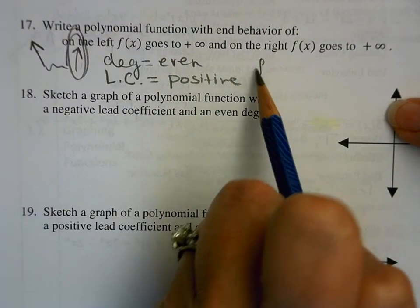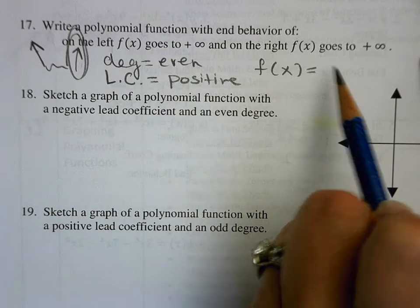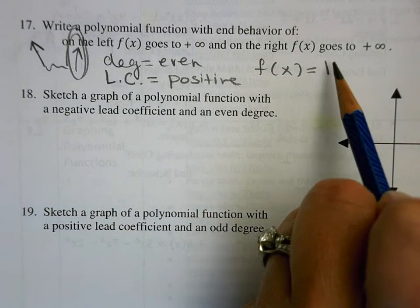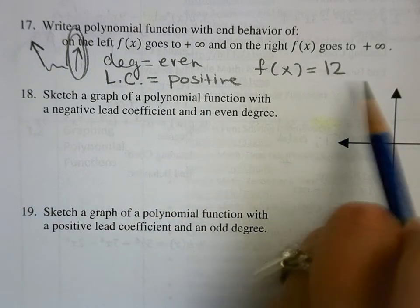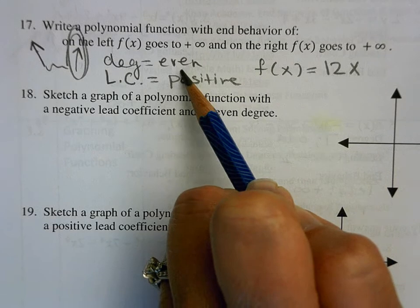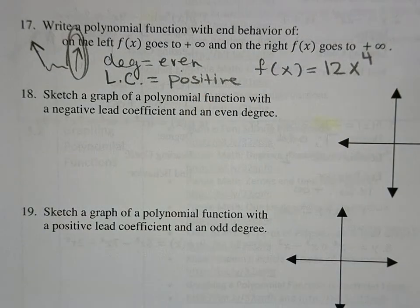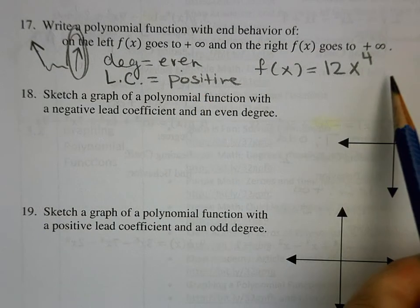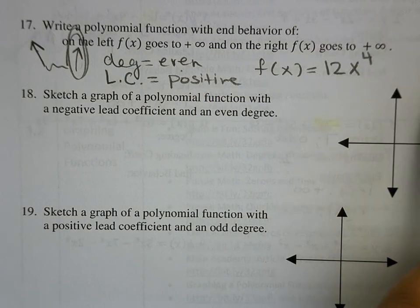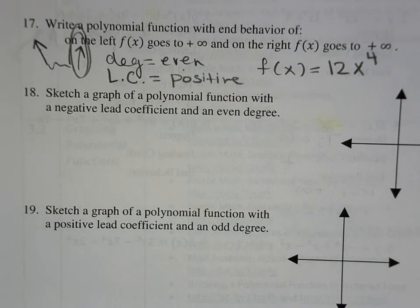I just create any equation as long as my front number is positive. I'm going to say 12 — you can pick any number — and then x to an even degree. How about 12x to the 4th? It doesn't matter what comes after that as long as it's a smaller power. So f of x equals 12x to the 4th.